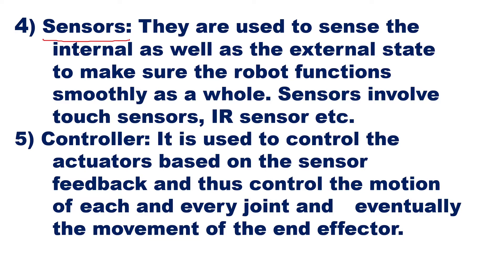Fifth and very importantly, the controller is the processor of the robot. It processes input signals from the sensors along with the algorithms and programs in the software, executes them, and then issues commands to the actuator to complete the task. The controller controls the actuators based on sensor feedback, thus controlling the motion of each joint and ultimately the movement of the end effector. These are the components of a pick and place robot.